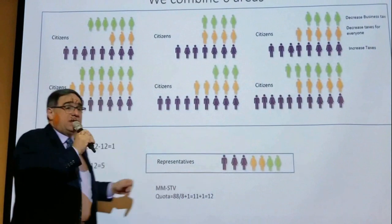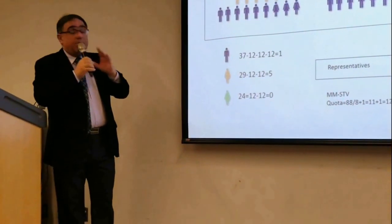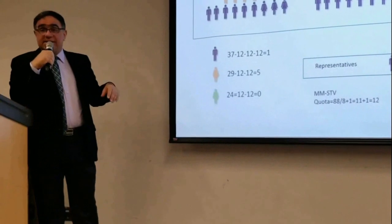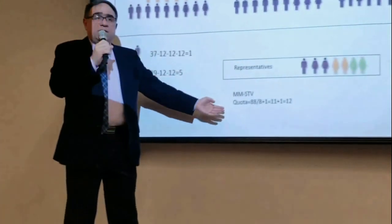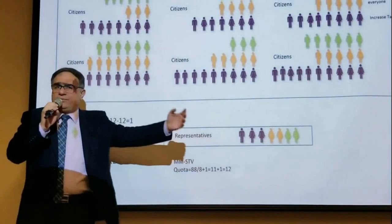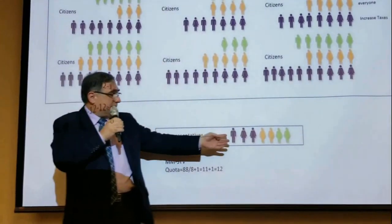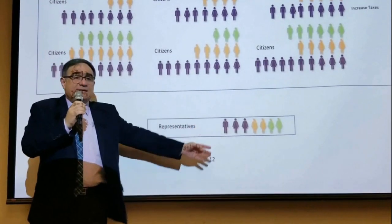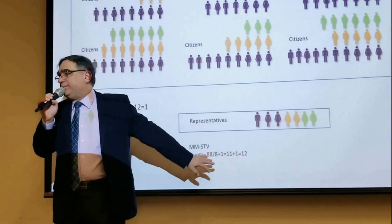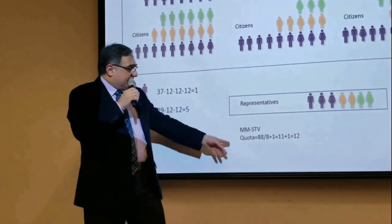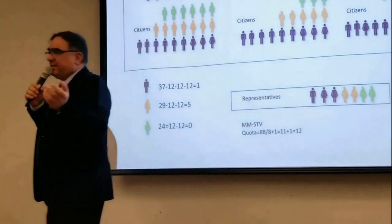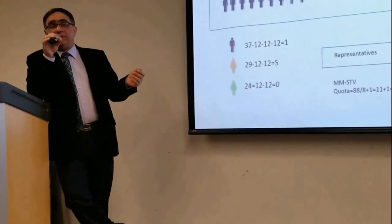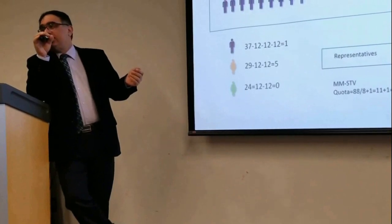That means for every twelve votes, you can send one person to parliament. The blue people have 37 votes — so three people from that group can go to parliament spending twelve votes each. The green group has 29 votes — they can send two people, with five votes left over that can't send anyone. The 24 green people can send two people. Is proportionality there? Yes — most people want to decrease taxes, and most people in parliament want to decrease taxes.